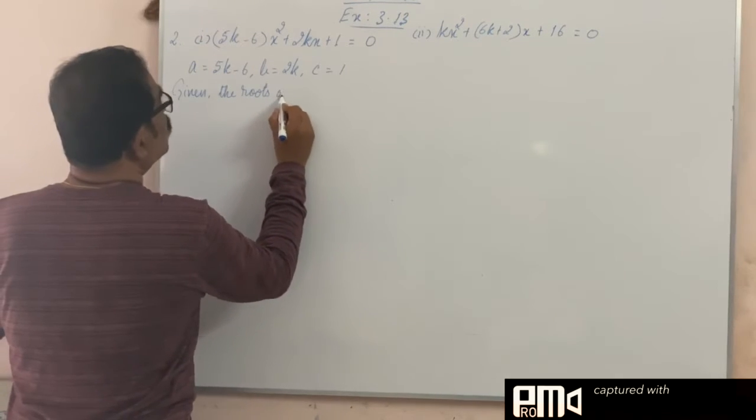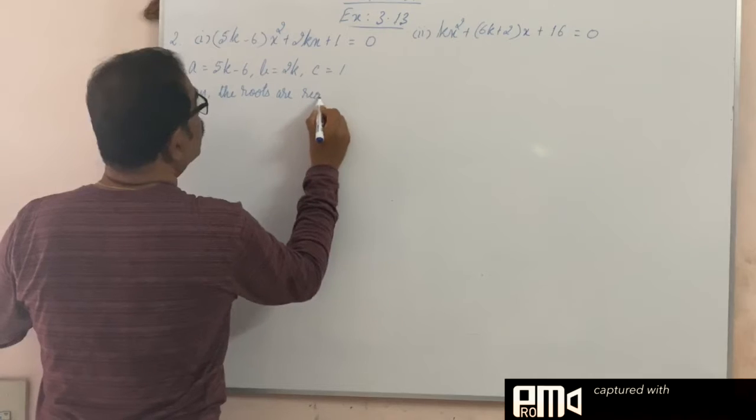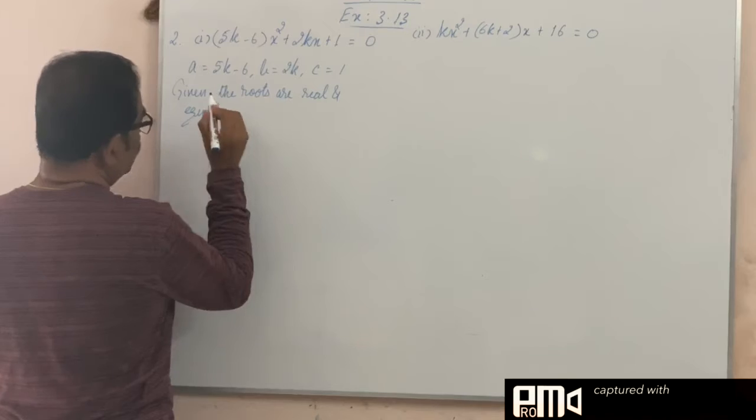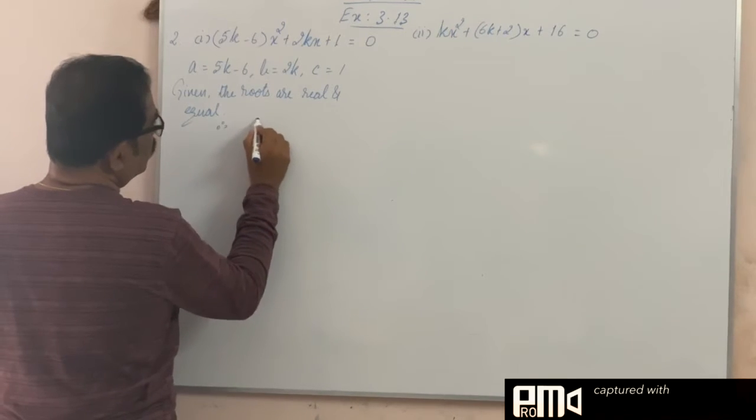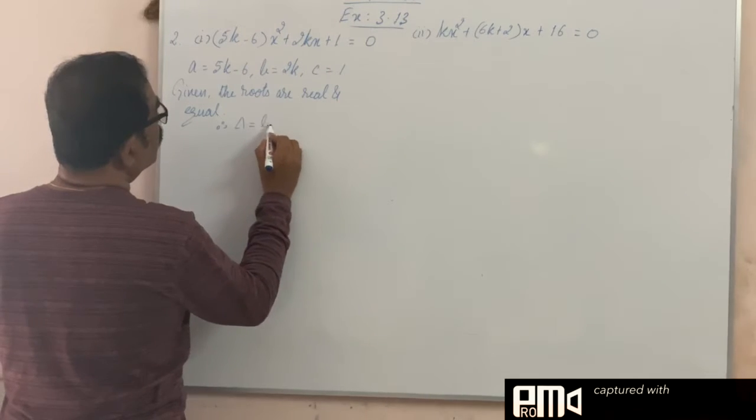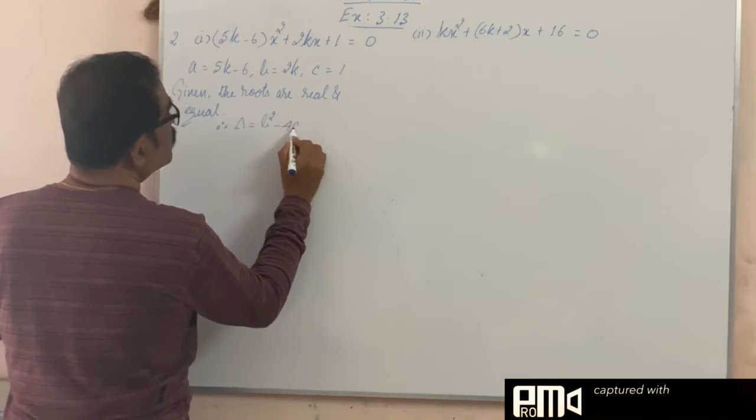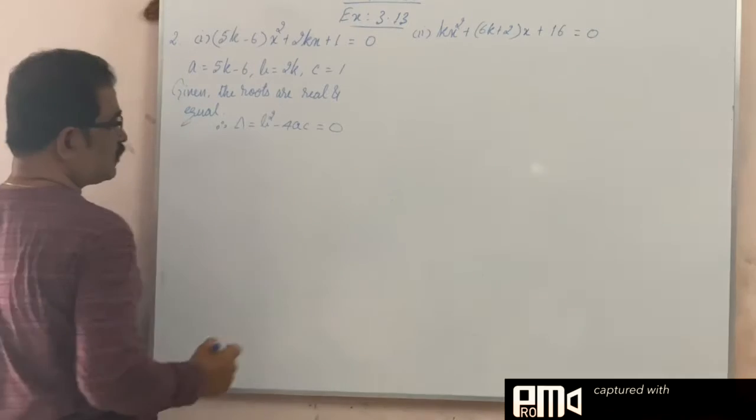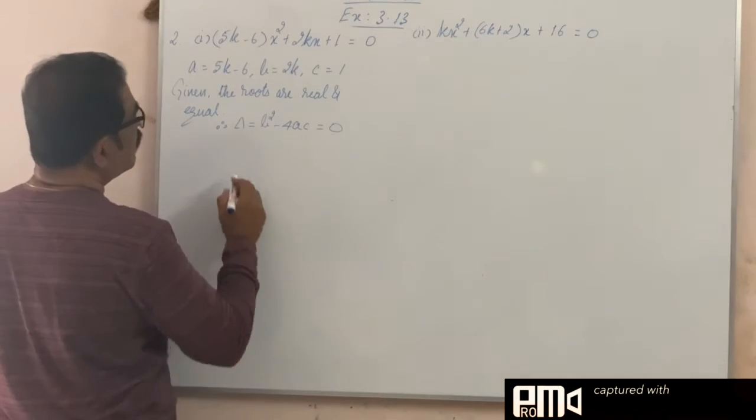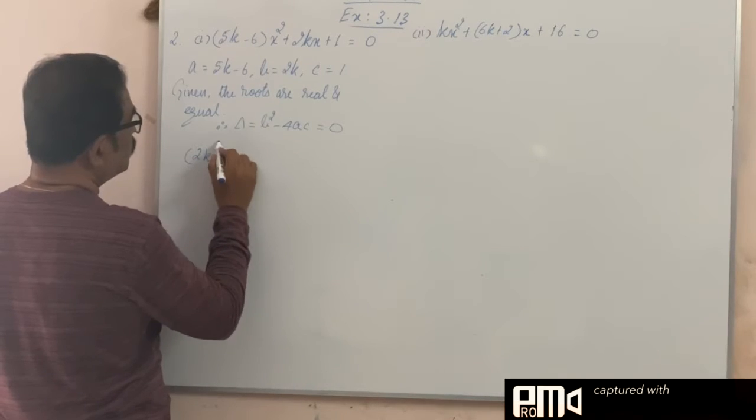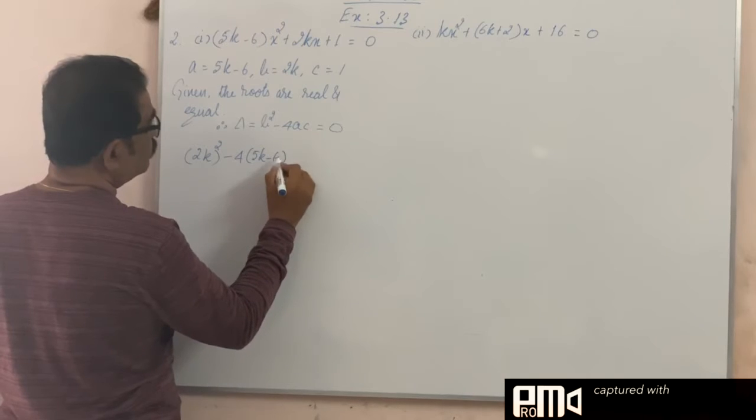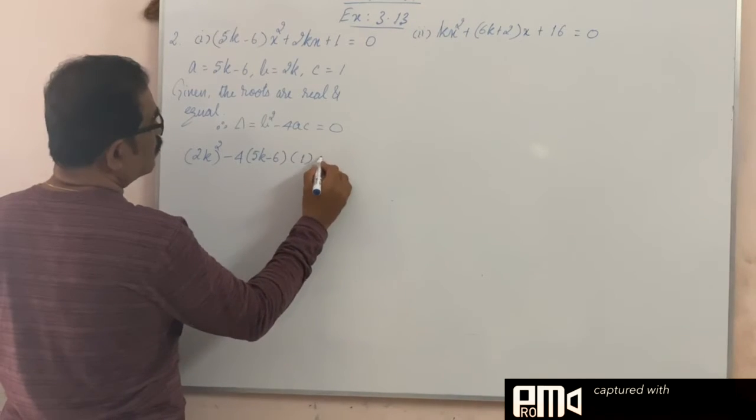Given, the roots are real and equal. Therefore, delta is equal to b square minus 4ac is equal to 0. That is, b square minus 4ac is 0. b square means 2k the whole square, 4 into a, 5k minus 6, c 1 is equal to 0.